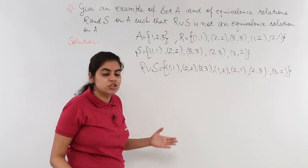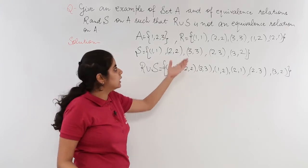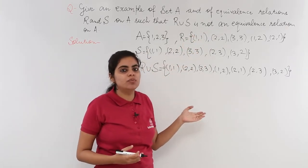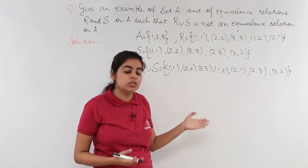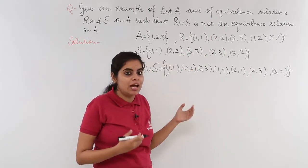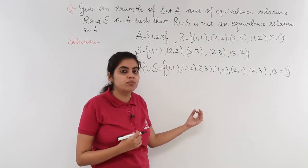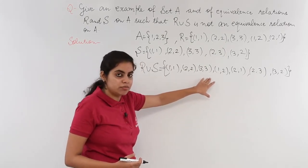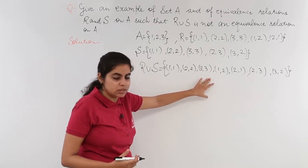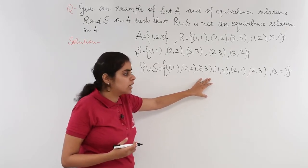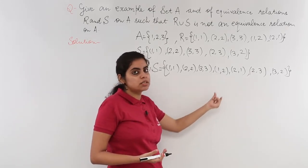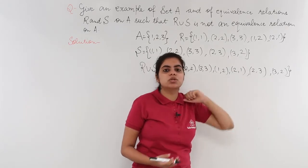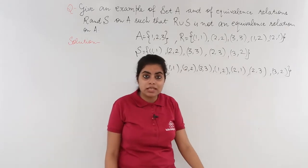Now let's check whether R union S is an equivalence relation or not — I need to prove it is not. Checking reflexive: (1,1), (2,2), (3,3) are present, so yes it is reflexive. Checking symmetric: (1,2) is present and (2,1) is also present; (2,3) is present and (3,2) is also present. So yes, it is symmetric.